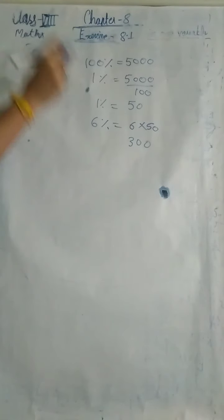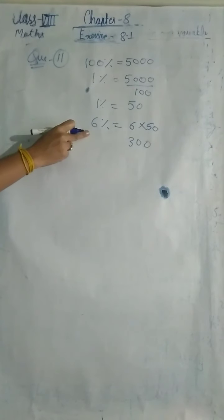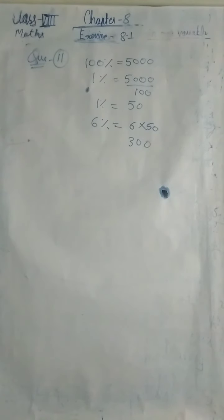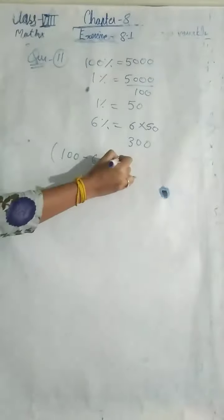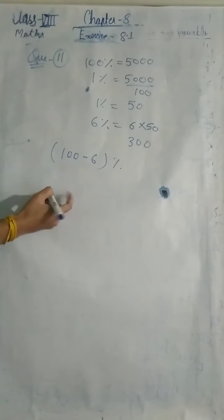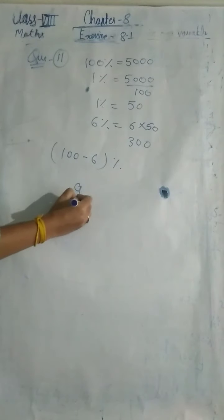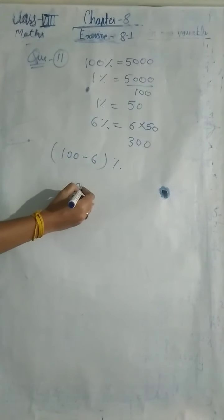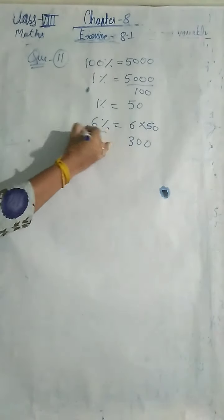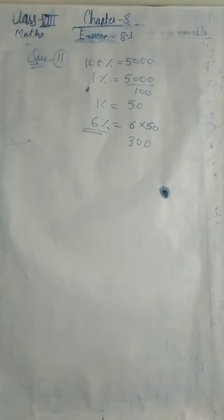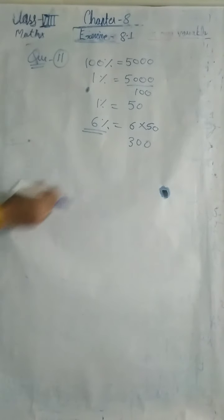So 300 fruits are oranges and mangoes combined. Therefore the number of other fruits is 5000 minus 300, which equals 4700.